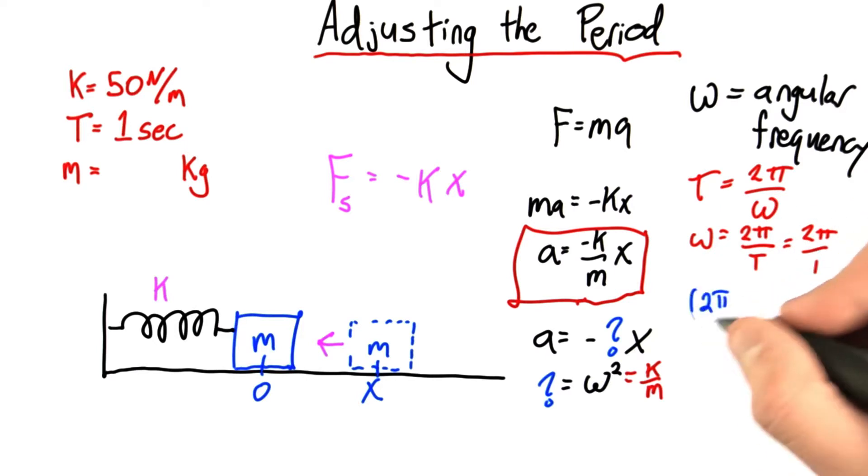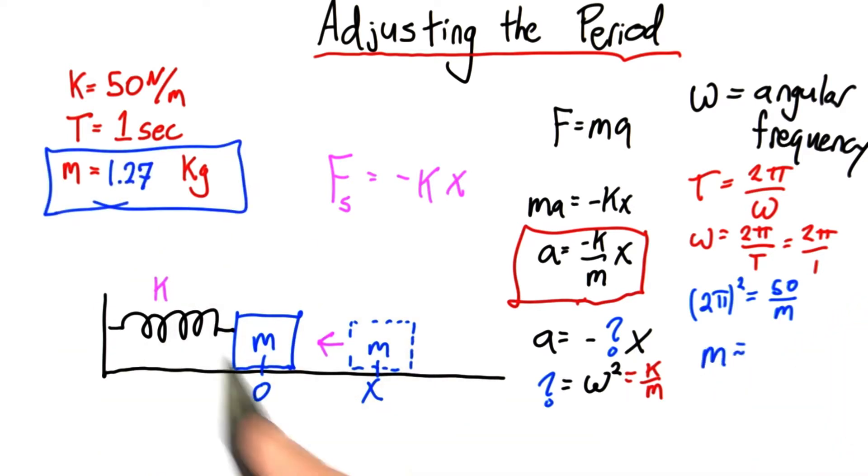Okay, well now I know that omega squared, 2π squared, is equal to k over m, 50 over m. Well, all I have to do now is solve this equation for m. And when I do, I find that I need a mass of 1.27 kilograms.